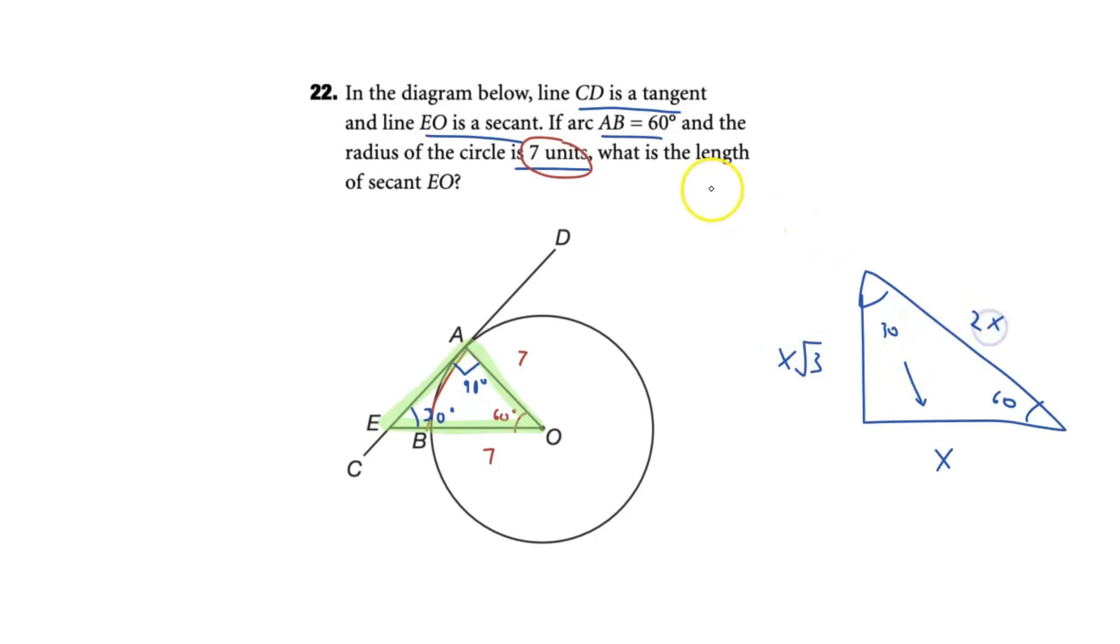Now watch this. We want to find the length of our secant EO. Well, guess what? Our length of EO right here, well, that is just the hypotenuse, right? Because we know we can see we have a value of seven for the radius that is across our 30 degree angle. And then what is across from our 60 degree angle is side EA in our triangle.